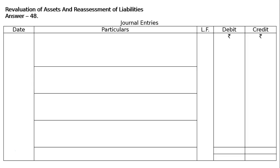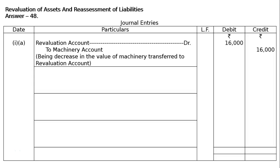Part 1A: Machinery to be depreciated by 16,000. Revaluation Account debited to Machinery Account 16,000 each. Decrease in the value of Machinery is transferred to Revaluation Account. Decrease is a loss or expenditure to the firm, hence it is debited to Revaluation Account.